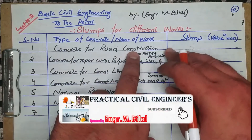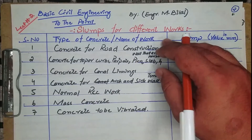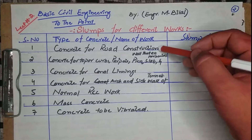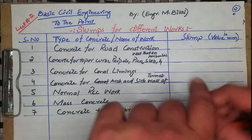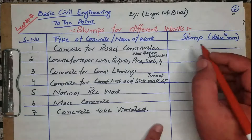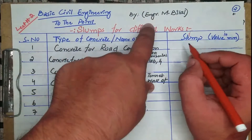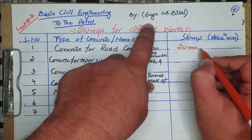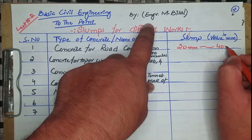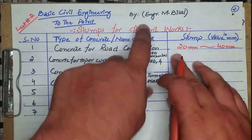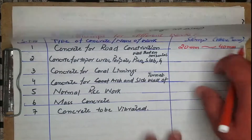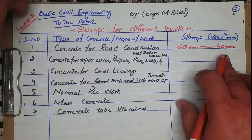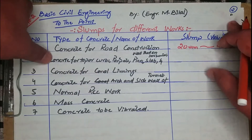The first one is concrete for road work. If you are going to construct a road, the concrete prepared for road construction will have a minimum slump of 20 mm and a maximum slump of 40 mm.